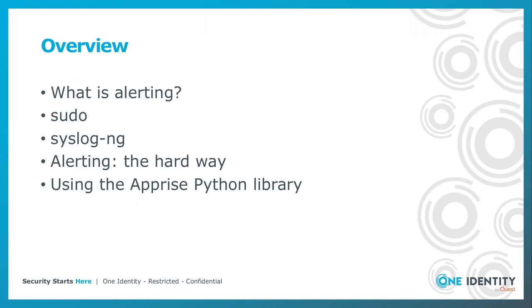Let me give you a quick overview of what I will be talking about. First of all, I will try to define what alerting is, then I will talk about two software I'm working with — sudo and syslog-ng — which are regularly used to send alerting. Then I will explain how to do alerting the hard way, and finally I will introduce you to the Apprise Python library, which makes alerting much easier.